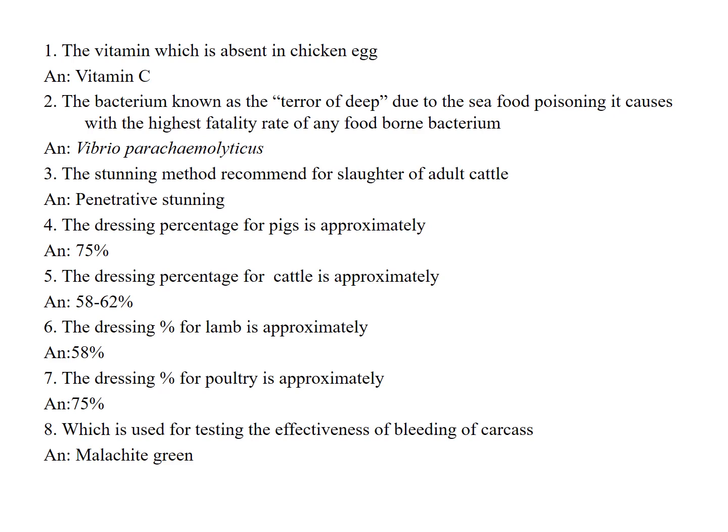The dressing percentage for cattle is approximately 58 to 62%. For lamb it is approximately 58%, and for poultry it is approximately 75%. So pigs and poultry share the same dressing percentage of 75%, while cattle and lamb are approximately 58%.